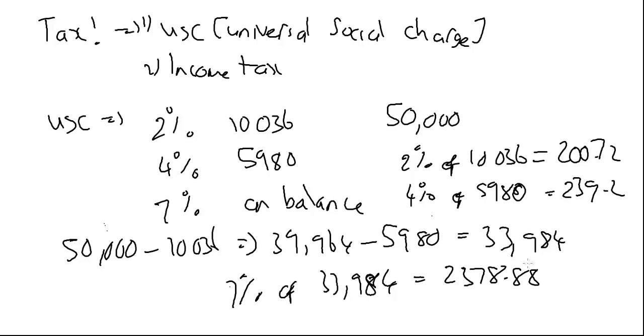So my entire universal social charge cost is going to be this plus these two. So I just add those up to get the total is equal to